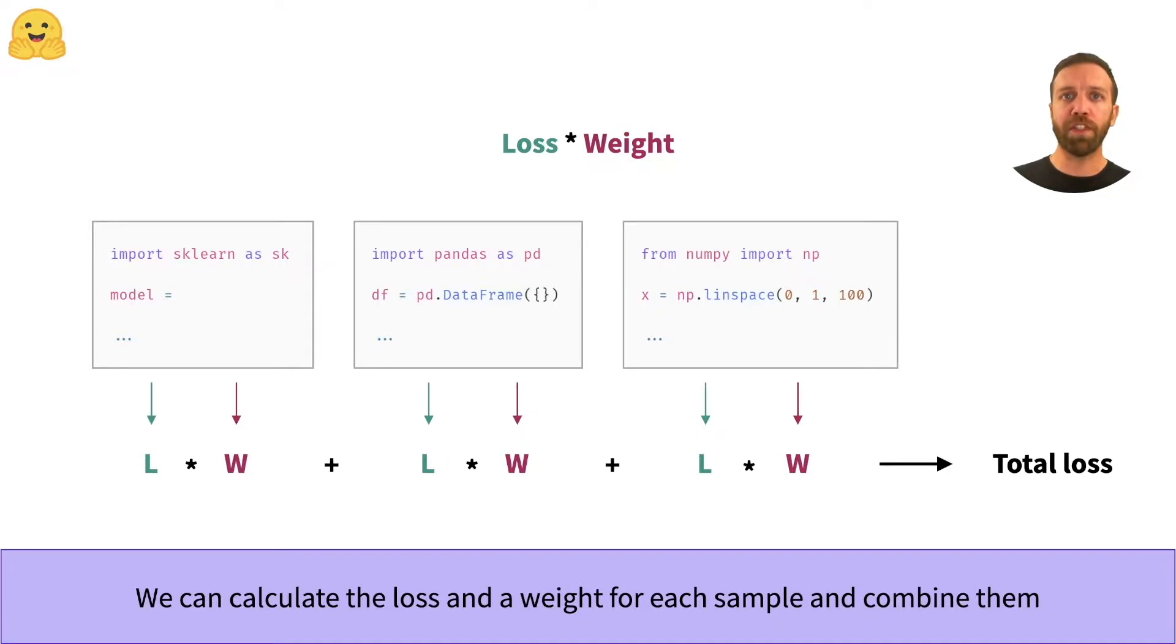Let's have a look at a specific example. We want to set up a language model that helps us autocomplete common data science code. For that task, we would like to weight samples stronger where tokens related to the data science stack, such as PD or NP, occur more frequently.